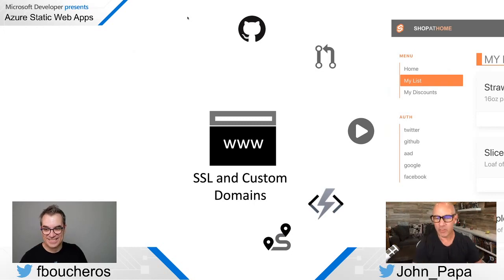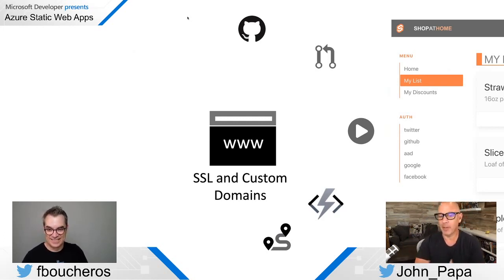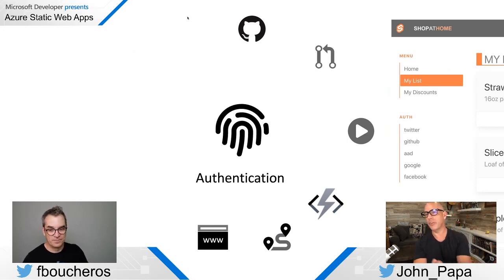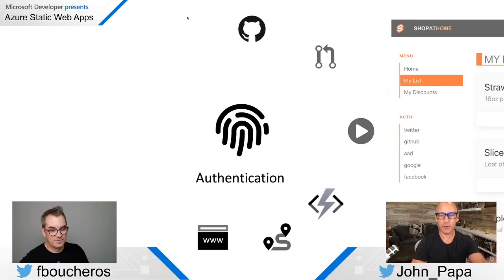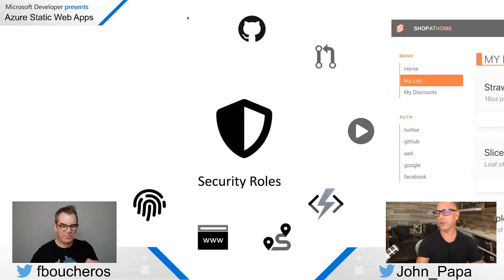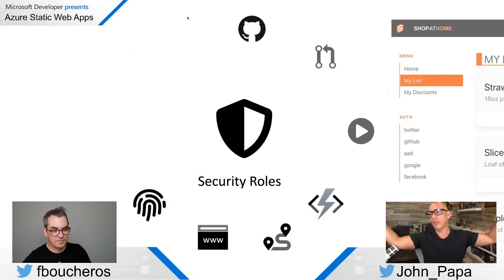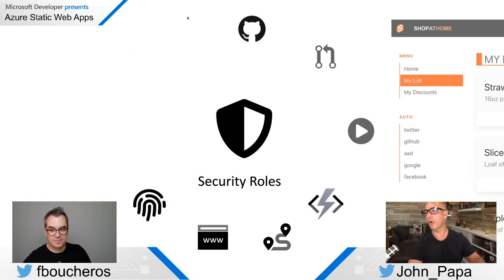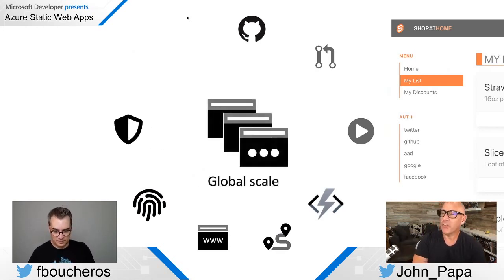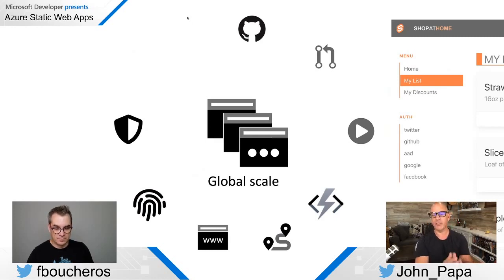Then your company says they want a custom domain — not some crazy URL. And they want a secure connection with SSL and a certificate. Is that going to cost money? Oh, and we'll have preferred customers and non-preferred customers, so we need authentication to know Frank is actually Frank. We need security roles so preferred users can access discounts at local grocery stores. And this needs to work in Asia, Africa, Western Europe, the United States, South America — so we need global scale.